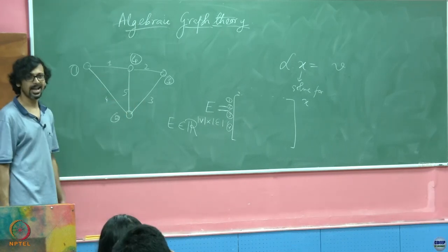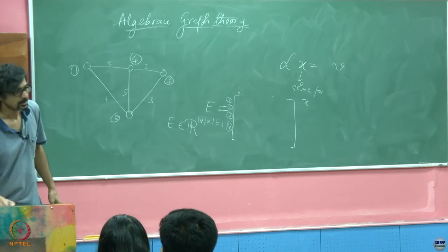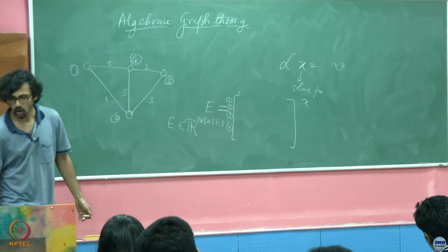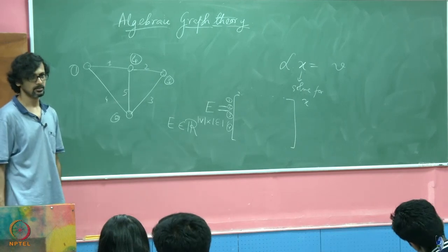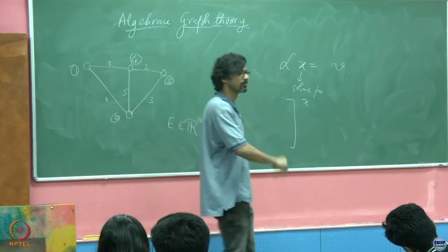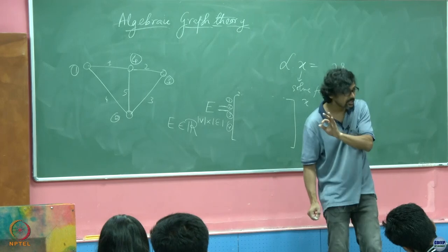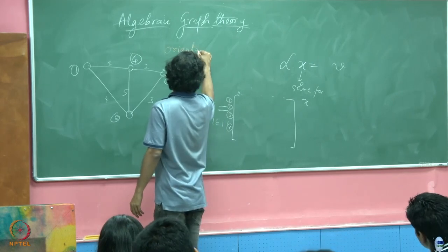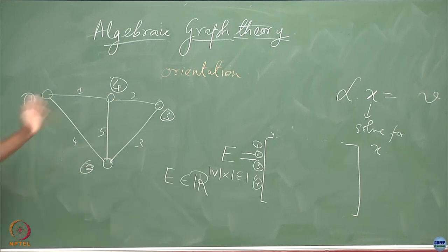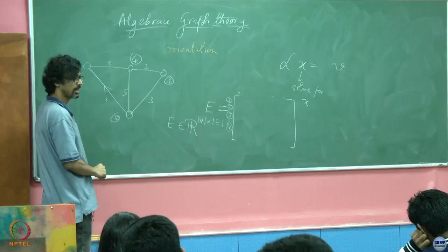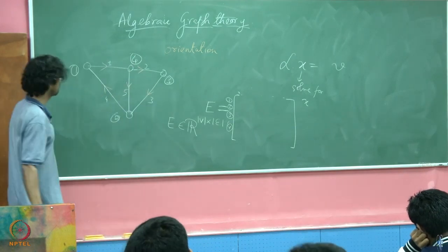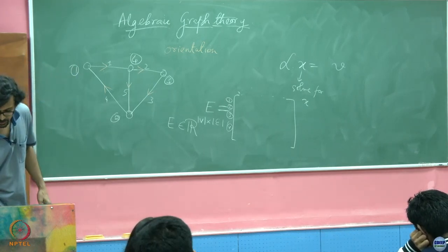When filling the column for edge 1, it turns out that for a given undirected graph the incidence matrix you write and the one your friend writes need not be the same. That stems from the fact that in order to write the incidence matrix, we assign an orientation to every edge — and this orientation can be completely arbitrary. Let me go ahead and assign an arbitrary orientation.